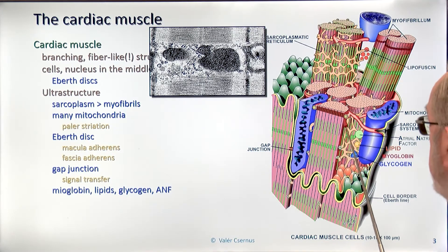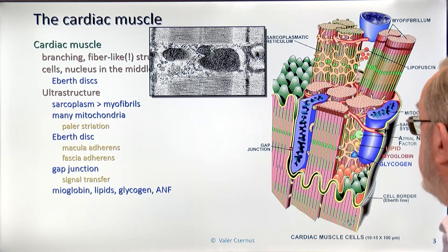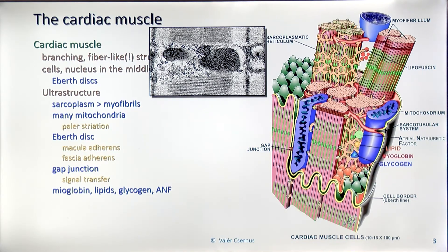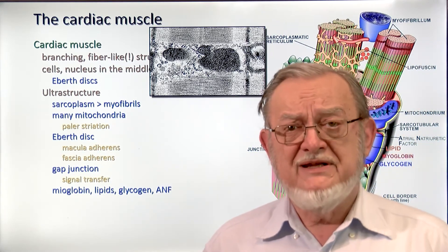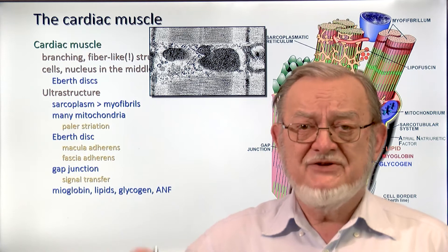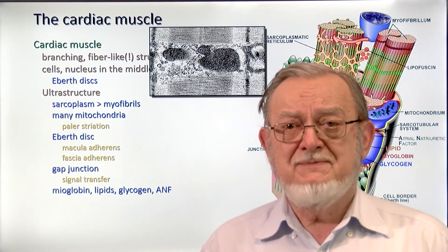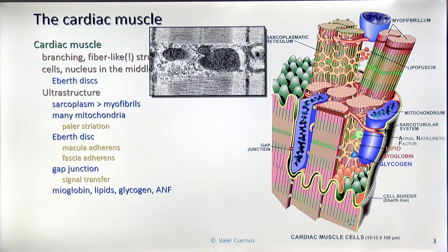The sarcoplasm of cardiac muscle, similar to skeletal muscle, contains myoglobin which stores oxygen reserve, as well as lipids and glycogen particles as fuel. Additionally, we have a hormone named ANF — atrial natriuretic factor — which is primarily present in the atria. This hormone controls blood quantity: whenever the pressure in the atrium becomes lower than required, this hormone is liberated, acts on the kidney, and the kidney retains sodium and water, increasing blood volume and blood pressure.